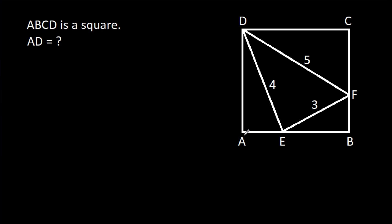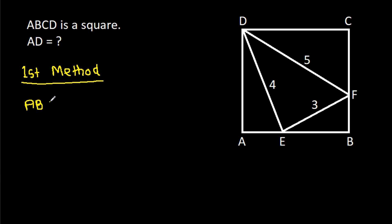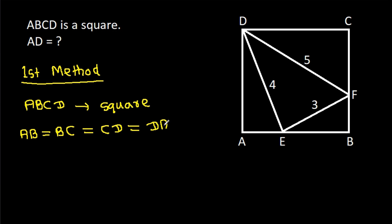In this video, we have been given that ABCD is a square and DE is 4, EF is 3, and DF is 5. We have to find AD. So for the first method, we know that ABCD is a square, so AB = BC = CD = DA. Suppose DA is X and AB is X.